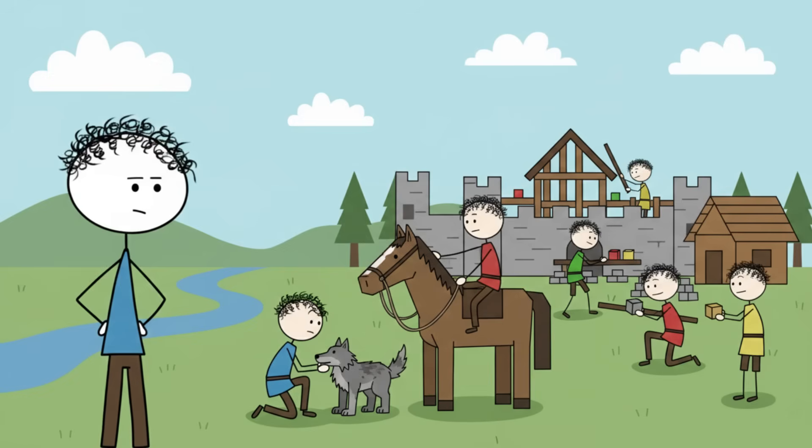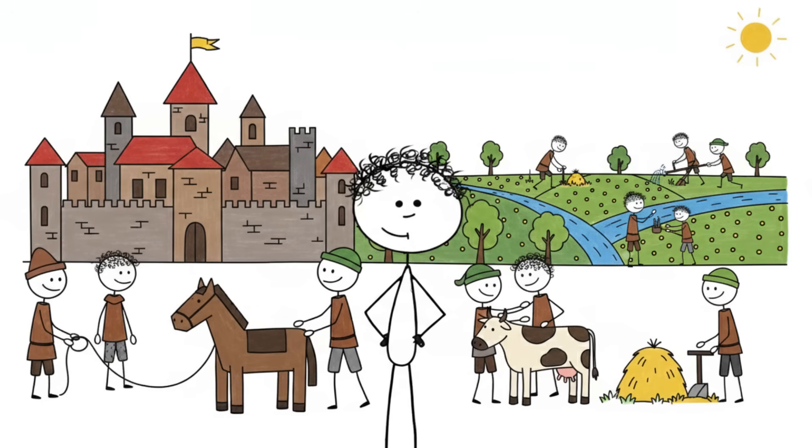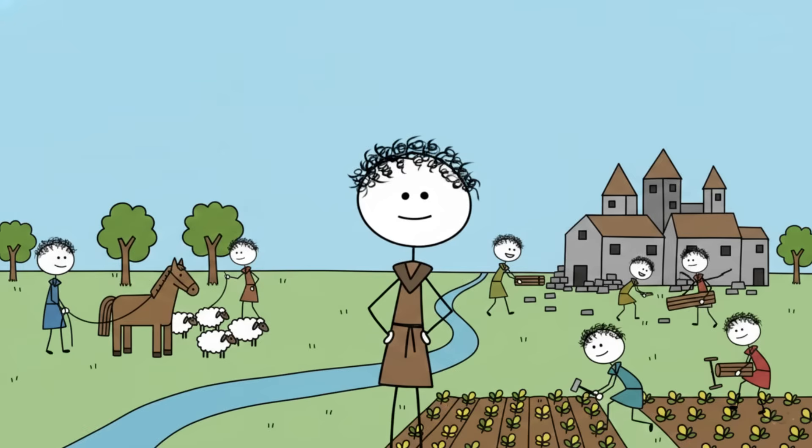Once we settled down, domesticated animals, and built cities, the immediate intense cognitive demands of survival shifted. We outsourced problem-solving to collective knowledge. Domesticated plants became less diverse and potentially less nutritious, and the need for raw brute cognitive processing to navigate a wilderness decreased.